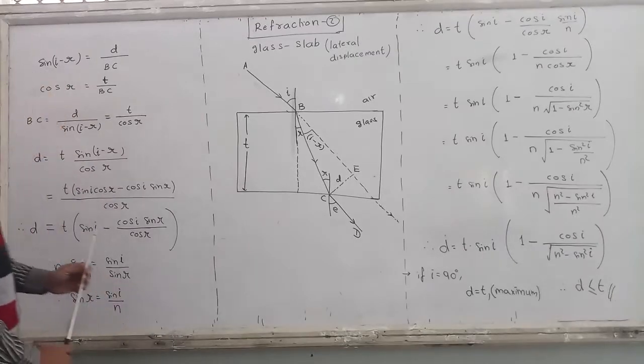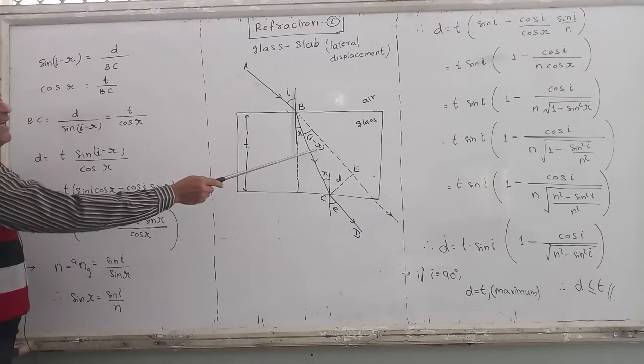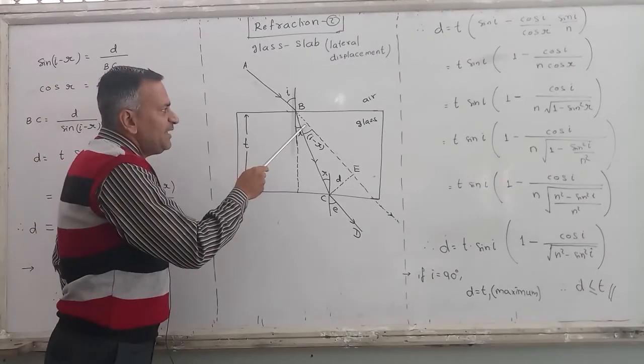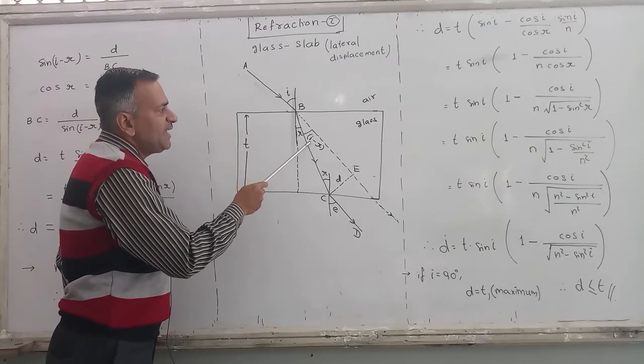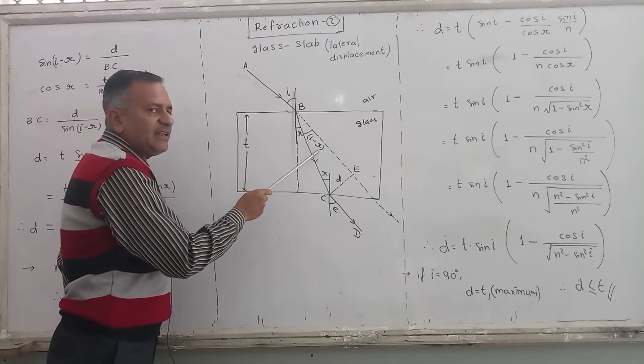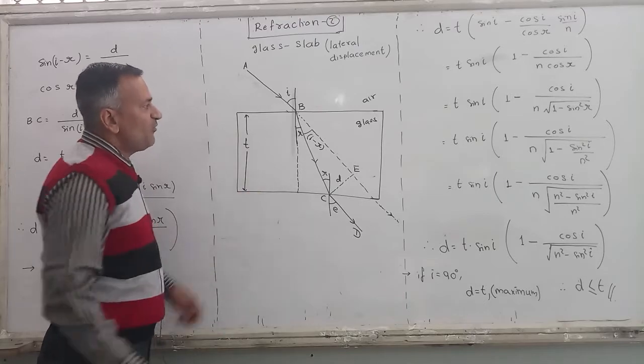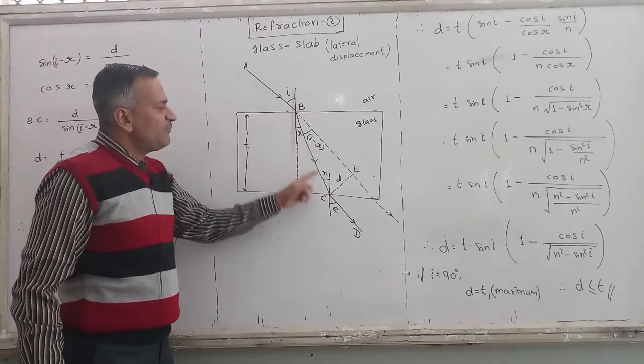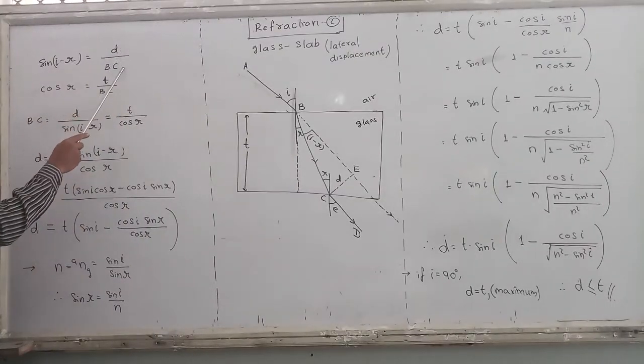The first thing in the derivation: find the sine of this angle and cosine of this angle. So you have to find sin(I minus R). In the triangle, just see, this is the angle concerned. Sine will be opposite side over hypotenuse. So for this angle, what is the opposite side? It is D and what is the hypotenuse? It equals BC. So sin(I minus R) equals D upon BC.